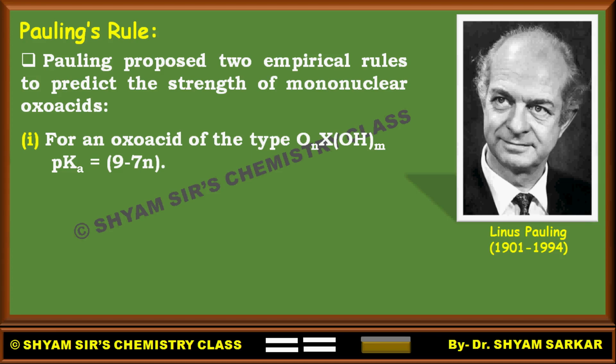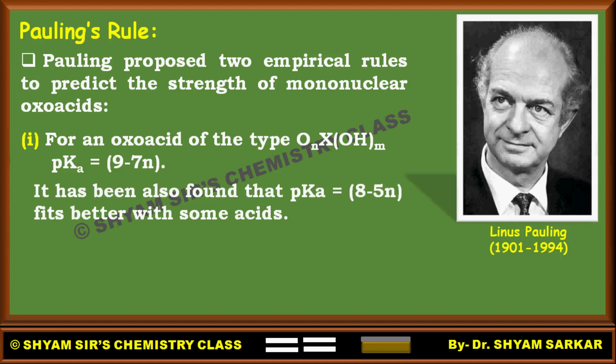Nowadays one more rule is there because the original rule in many cases does not work. The latest rule is: for many compounds or acids, pKa equals 8 minus 5N. This formula fits better, so we will use 8 minus 5N for further application. You can also use 9 minus 7N — there is nothing wrong about it — but the latest version, pKa = 8 minus 5N, is preferred.